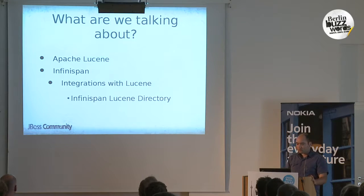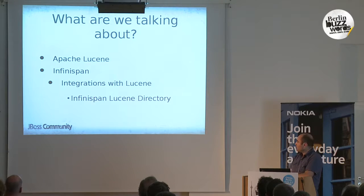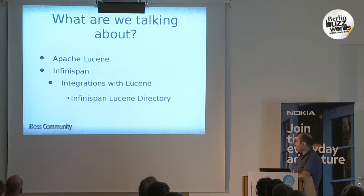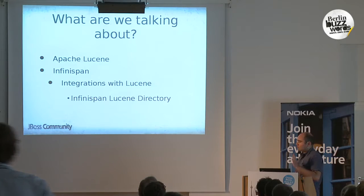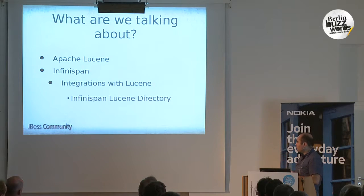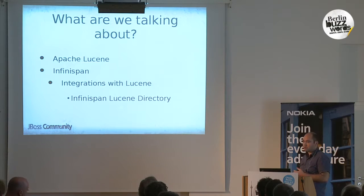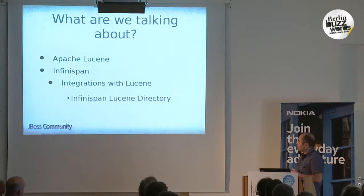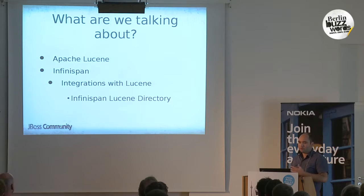So what are we going to talk about? It's strongly related to Apache Lucene and to InfiniSpan, because they are very, very integrated in various ways. Among the different ways they can be used together, I'm going to specifically focus on the InfiniSpan Lucene Directory, which is basically a way to store indexes inside the InfiniSpan data grid and see what kind of benefits you can get out of it.